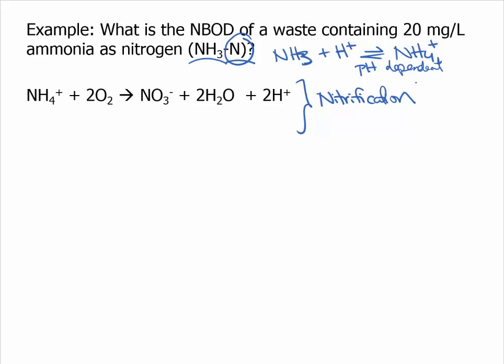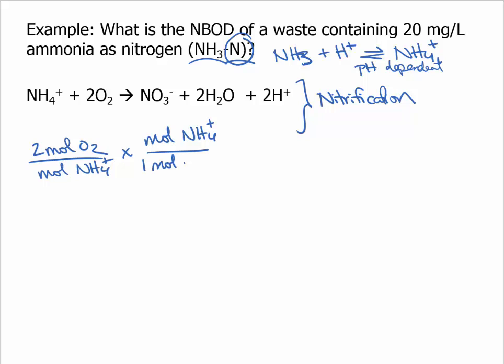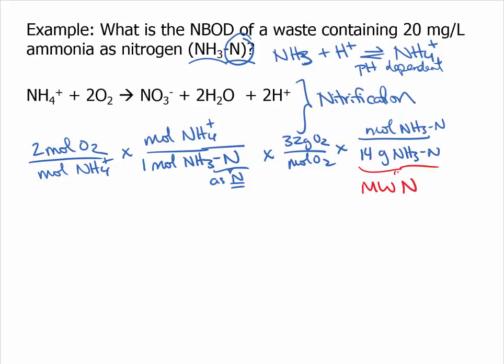Bacteria that consume ammonium with oxygen and produce nitrate perform nitrification. This biochemical reaction has an oxygen demand of two moles of oxygen per mole of ammonium. For every mole of ammonium, there is one mole of nitrogen, and so we can write this as ammonia as nitrogen — we are literally interested in the nitrogen and not the ammonia here. Then we multiply by the molecular weights, using the molecular weight of nitrogen. This is equal to 4.57 grams of oxygen per gram of ammonia as N, which is the COD equivalent of ammonia.